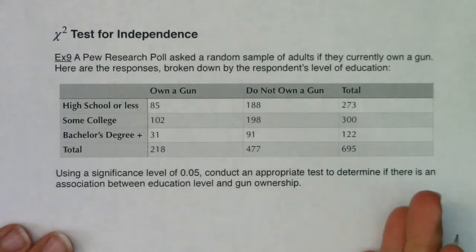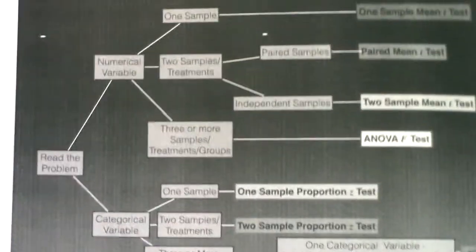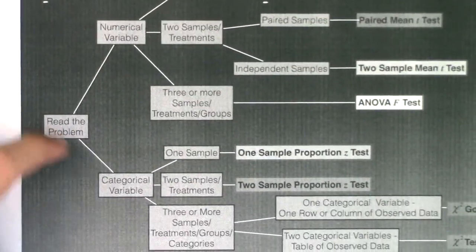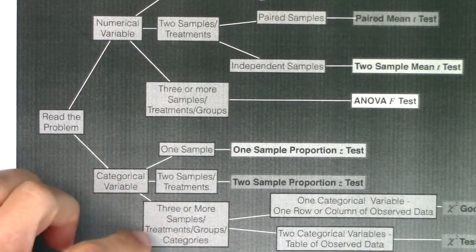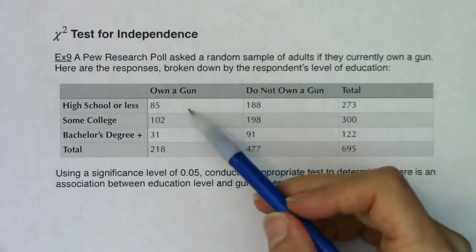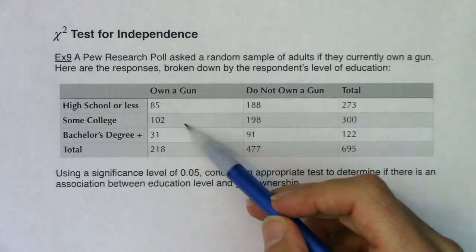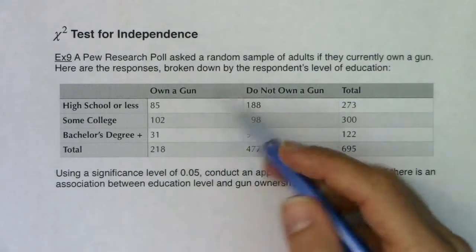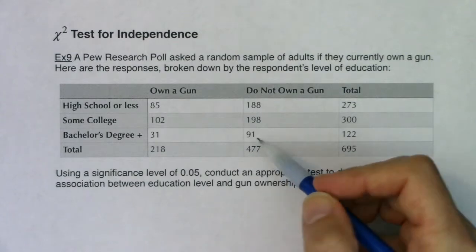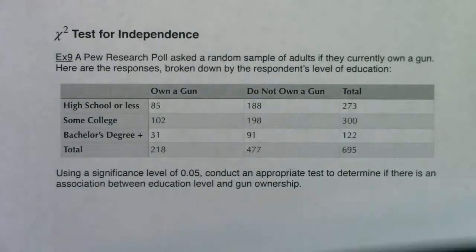Another way of figuring out you're in proportion land is that you have categorical variables. We had two categorical variables and actually six categories: owning a gun in high school, not owning a gun in high school, some college and owning a gun, some college and not owning a gun, bachelor's or higher and owning a gun, and bachelor's or higher and not owning a gun. There was a lot to take in in that two-way table.